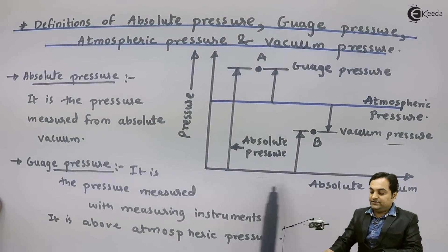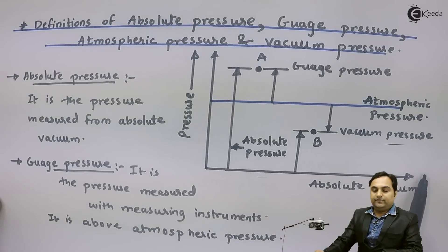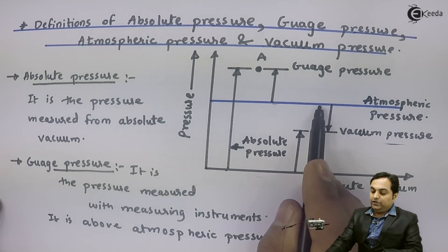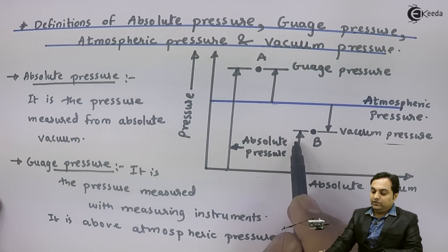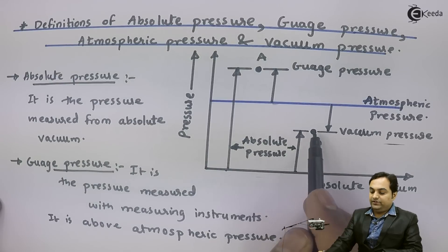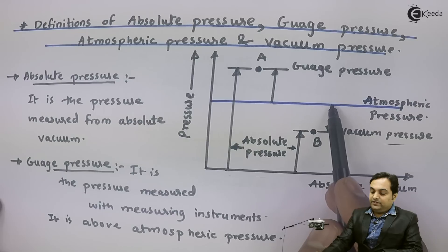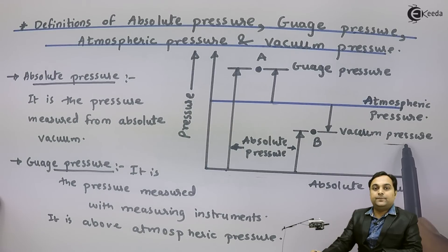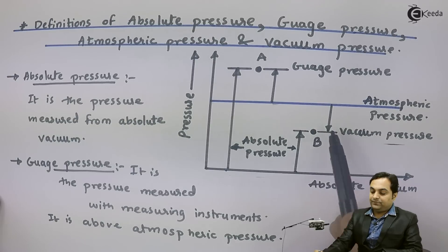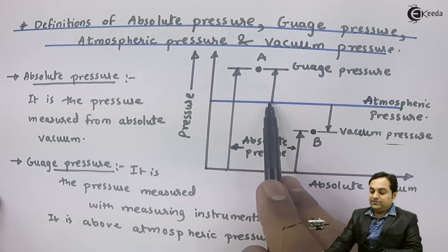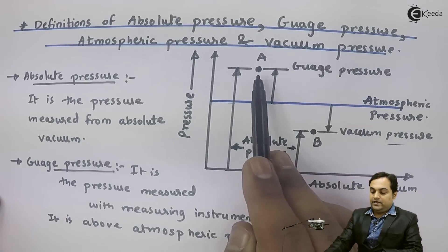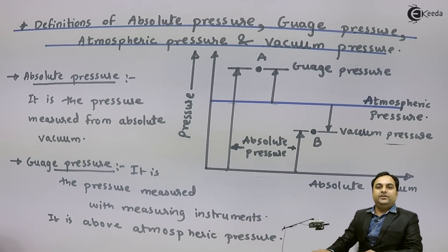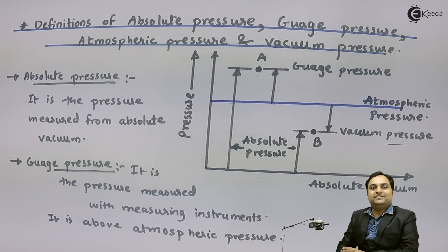To recap: absolute pressure is measured from absolute vacuum, which is the zero value of pressure. For point B, which is below atmospheric pressure, if measured with respect to absolute vacuum, that is still called absolute pressure. However, if we measure the pressure of point B with reference to atmospheric pressure, it is called vacuum pressure — not absolute vacuum, because it is not measured from the zero line. For point A, pressure above atmospheric measured from atmospheric is gauge pressure, and if measured from absolute vacuum it is absolute pressure.